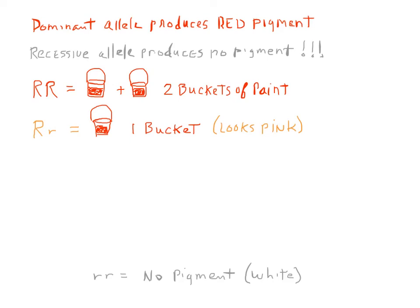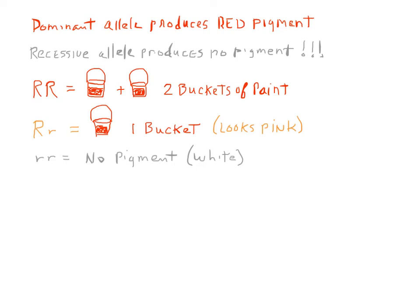Finally, in the homozygous recessive case — little r, little r — the mutant alleles don't produce any pigment. The absence of pigment is white, and that's why little r, little r is a white flower.